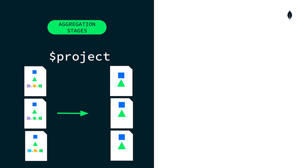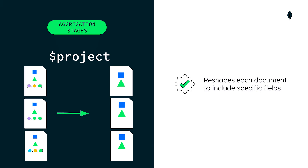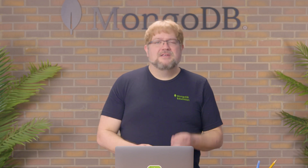Finally, the project stage reshapes each document so specific fields are included in, excluded from, or added to the output. This isn't an exhaustive list of stages — it's just the beginning. Visit the MongoDB docs to learn about more stages.